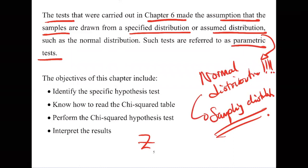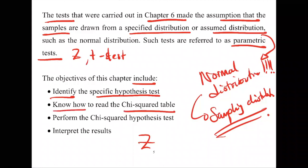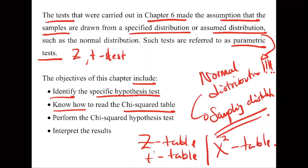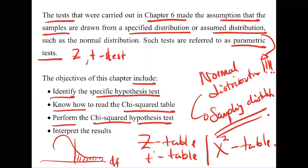The objectives of this chapter include: identifying the chi-square hypothesis test, knowing how to read the chi-square table — similar to the z and t tables, but with upper tails and degrees of freedom defined in terms of the rows and columns — and performing the chi-square test of association.